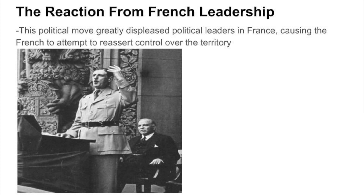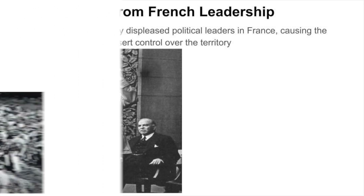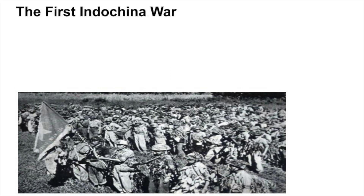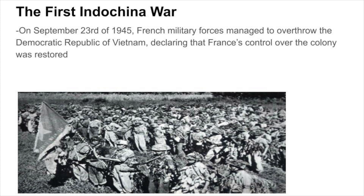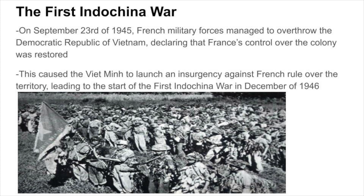This political move greatly displeased political leaders in France, causing the French to attempt to reassert control over the territory. On September 23rd of 1945, French military forces managed to overthrow the Democratic Republic of Vietnam, declaring that France's control over the colony was restored. This caused the Viet Minh to launch an insurgency against French rule, leading to the start of the First Indochina War in December of 1946.